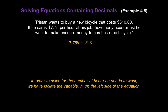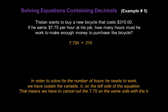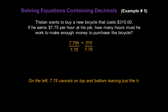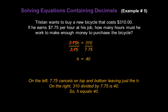In order to solve for the number of hours he needs to work, we have to isolate variable H all by itself on the left side. That means we have to cancel out 7.75, because it's on the same side of the equation with H. Since 7.75 and H are being multiplied, we use division to cancel 7.75. So divide both sides by 7.75. On the left, 7.75 cancels on top and bottom, leaving just H. And on the right, 310 divided by 7.75 is 40. So H equals 40.